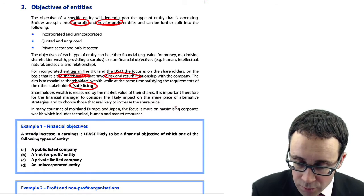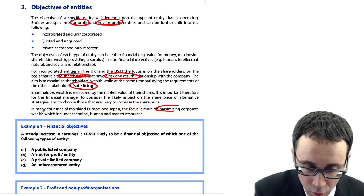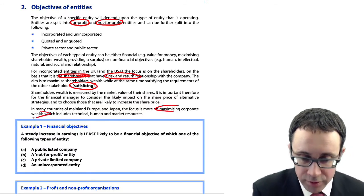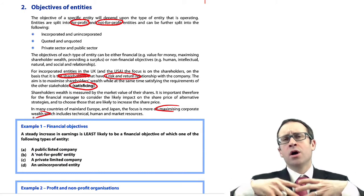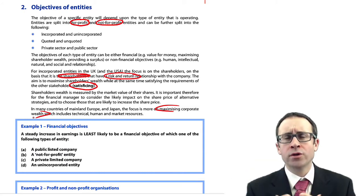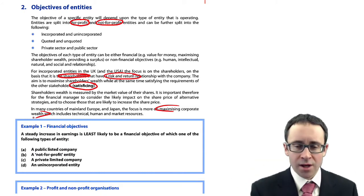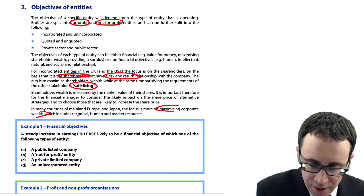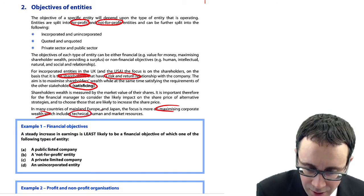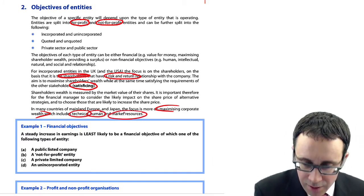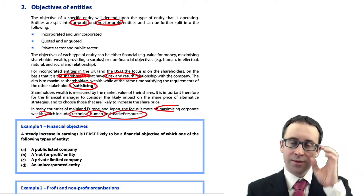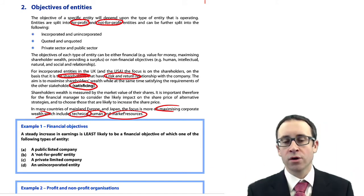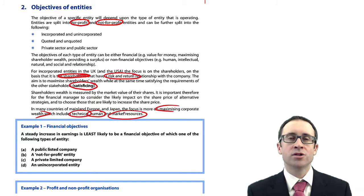The focus in mainland Europe and Japan is on maximising corporate wealth — not just shareholder wealth, but corporate wealth, which tries to encompass more than just an increase in share price and dividends. It starts to think about technical innovation, developing human resources, and what we're doing overall to try and impact the market.